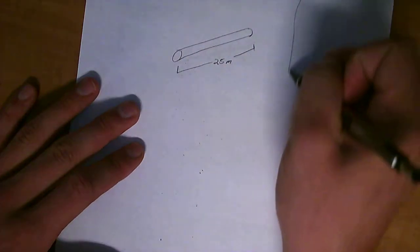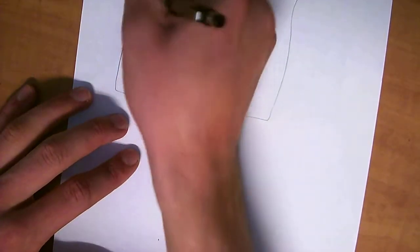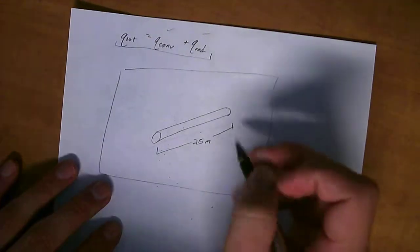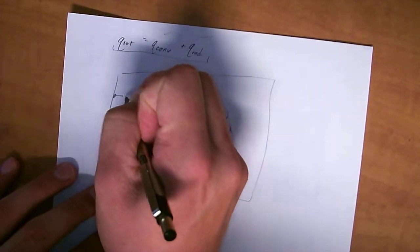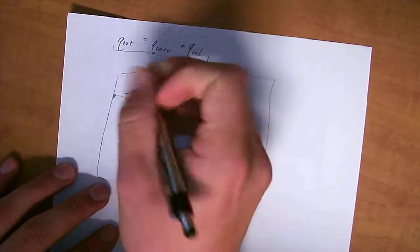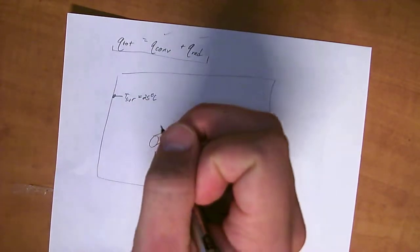We know that it's in a room of some kind. So we'll draw a box here because this is the surface that the radiation is going to act on. And we know that the T of the surface, we're going to call it T_sur, is equal to 25 degrees C.